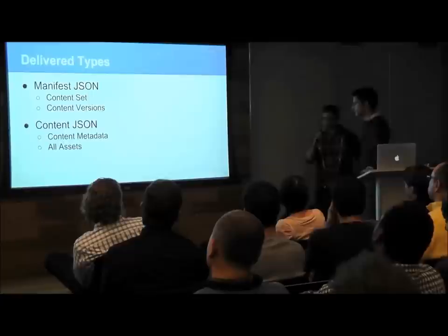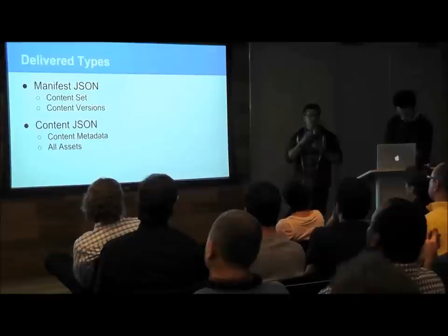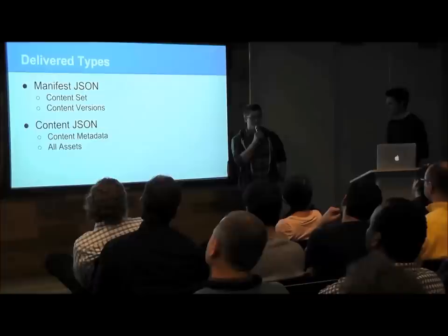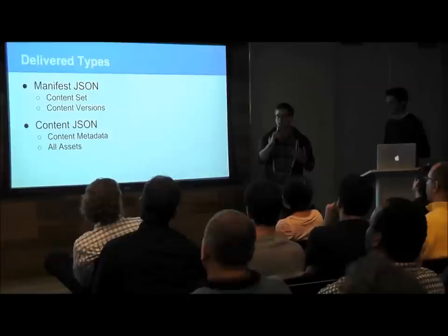When the device makes a request to our server, there's a two-step process to deliver the content. The first thing the device receives is a manifest — a file that defines the set of content the user on the device should see, as well as the version of each specific content item the device should download.